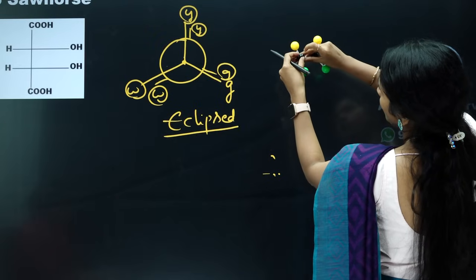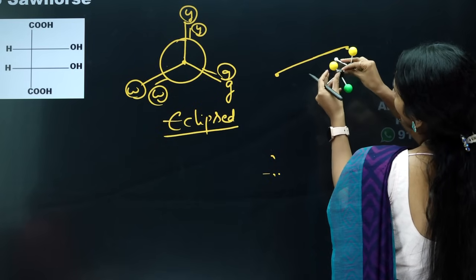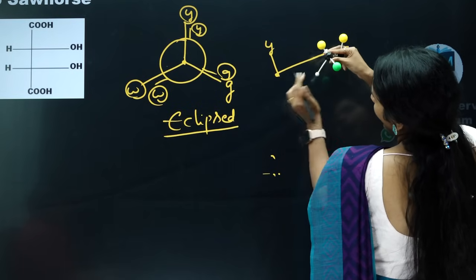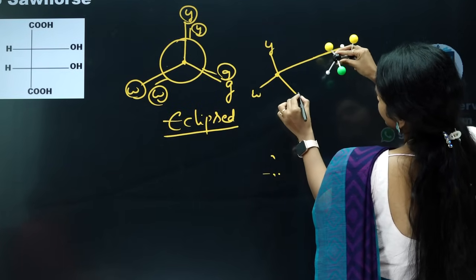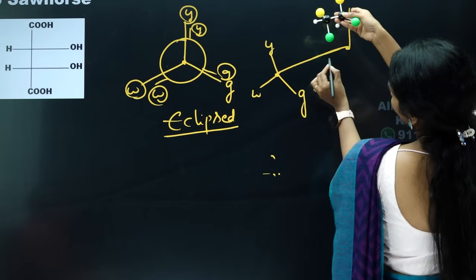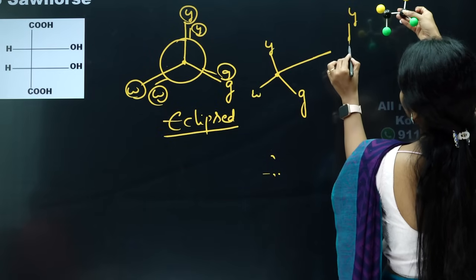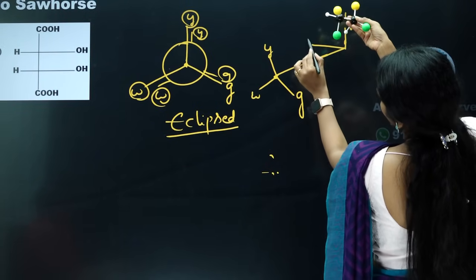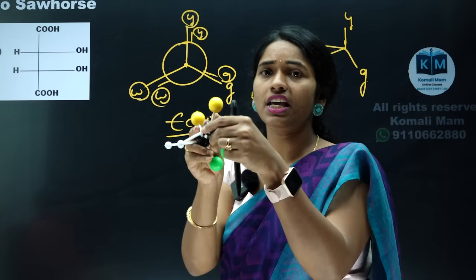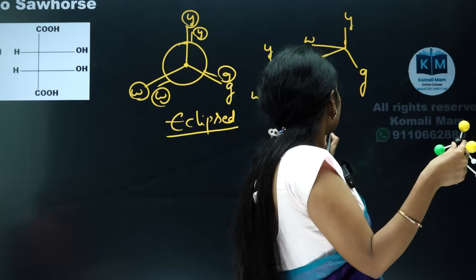In the sawhorse structure, one carbon is drawn lower-left and one upper-right. For the front carbon: top is yellow, down is white, and green is on the side. For the back carbon: yellow is top, white and green are on the sides. If you see the same structure keeping two yellow balls away from the plane and green and white towards the plane, that becomes the Fischer structure — two yellows on the vertical line, green and white on the horizontal sides.